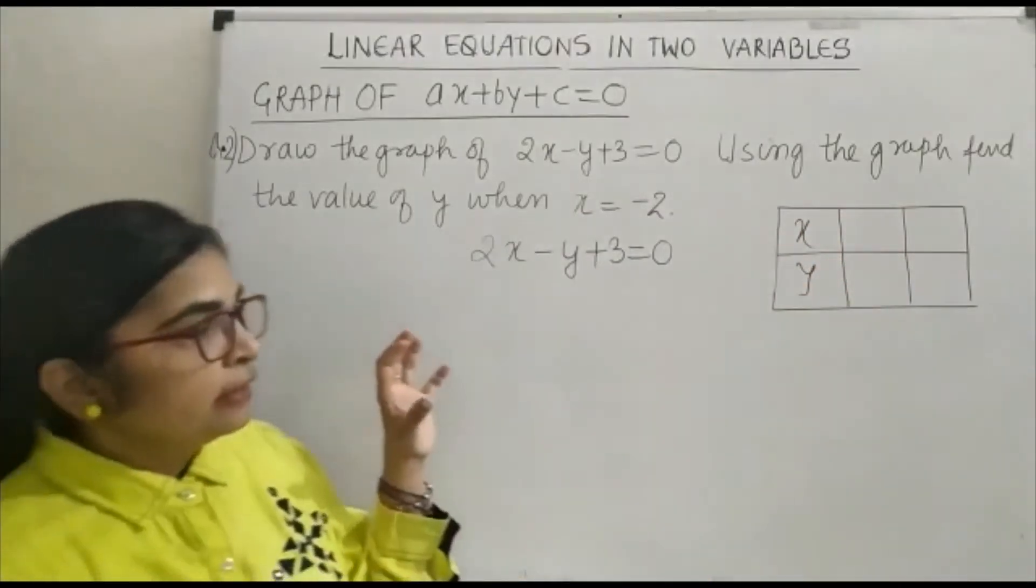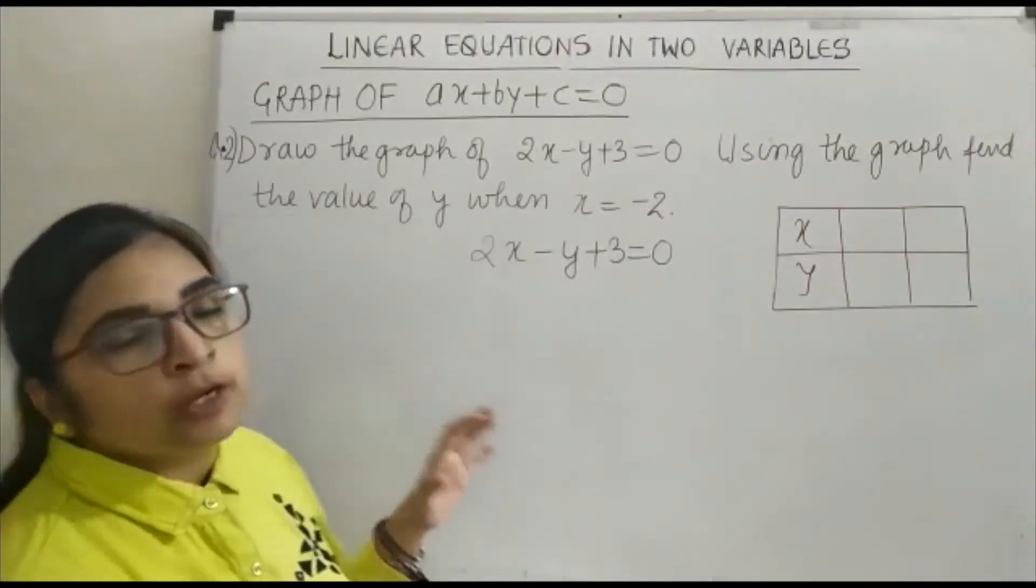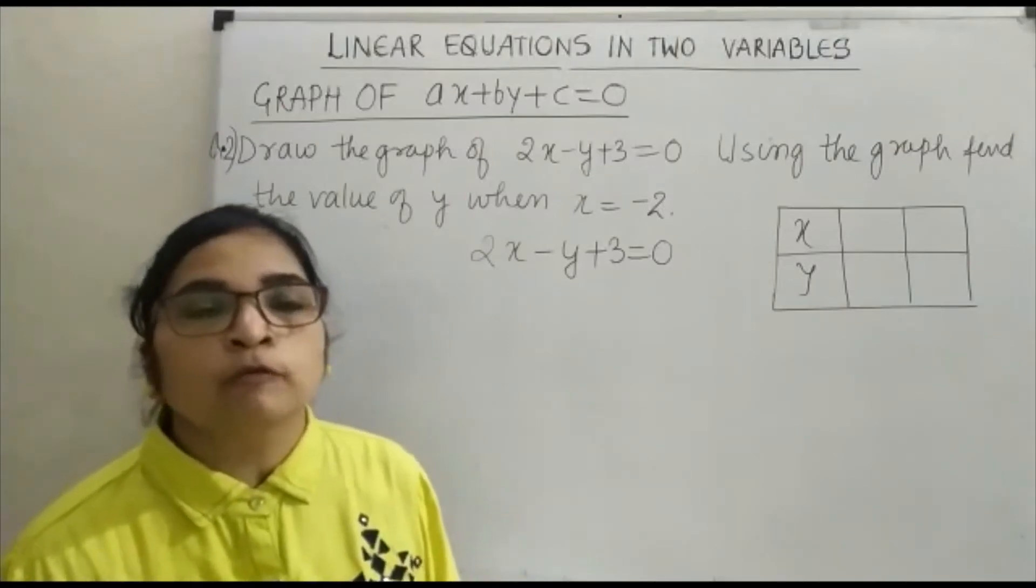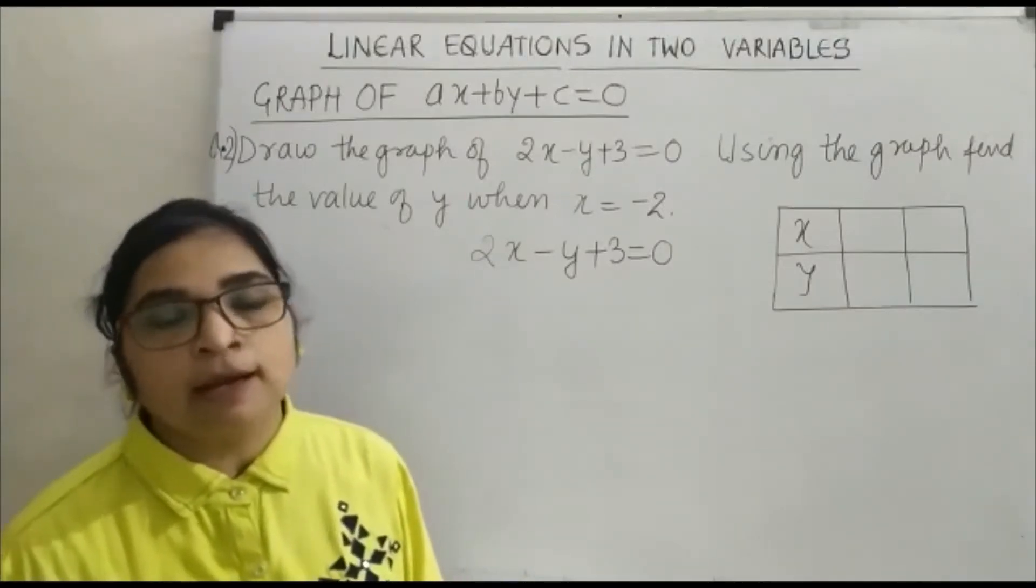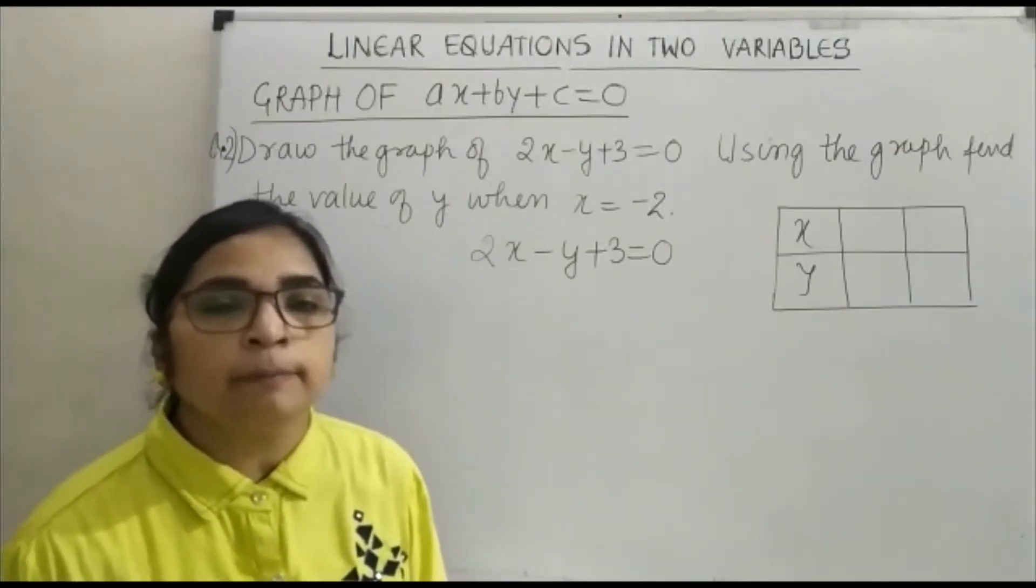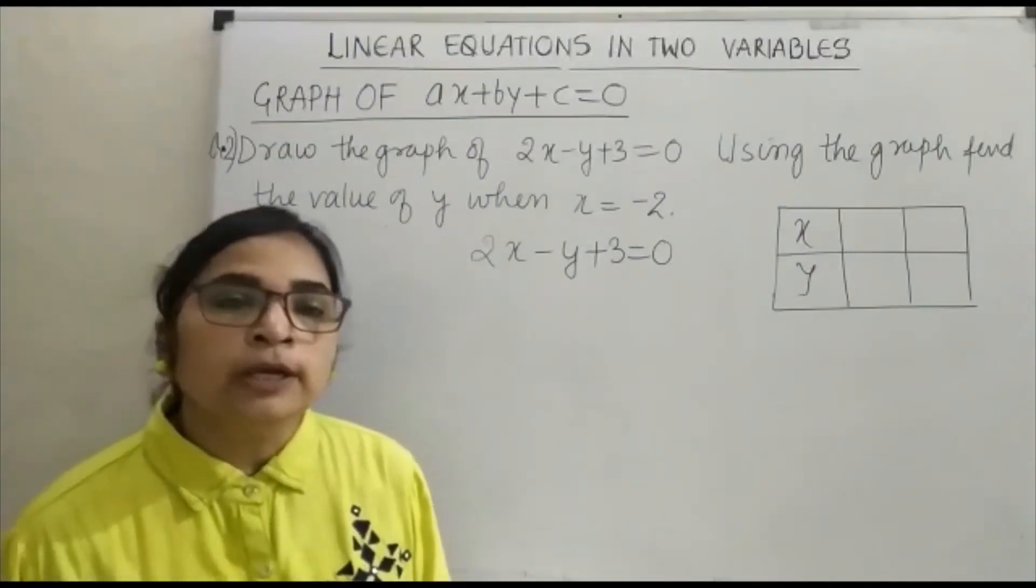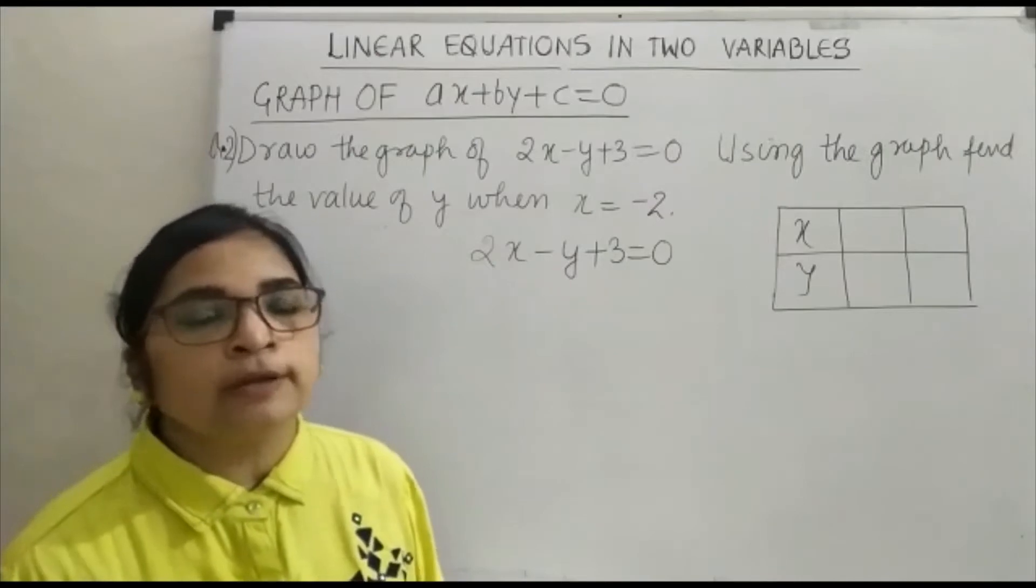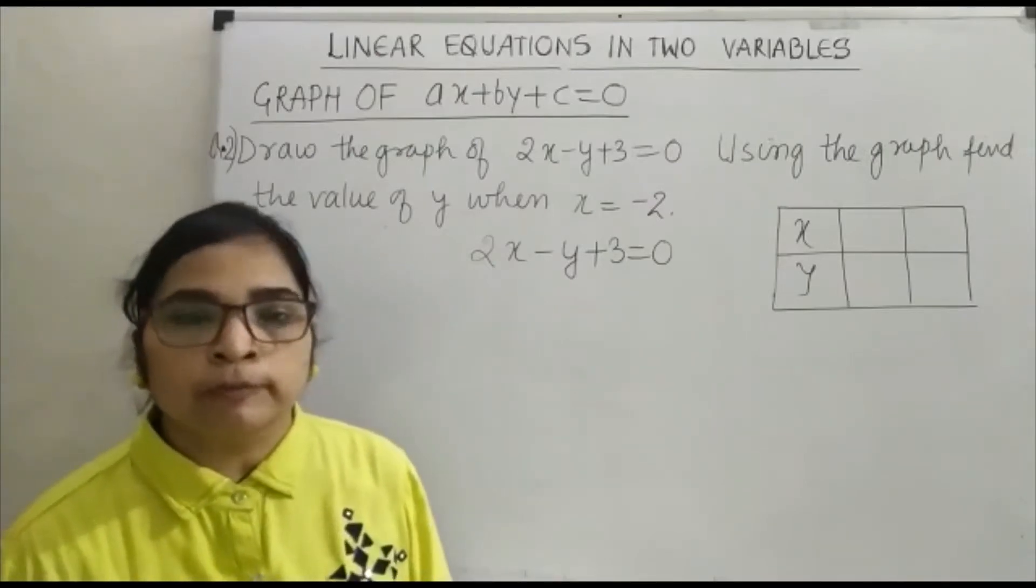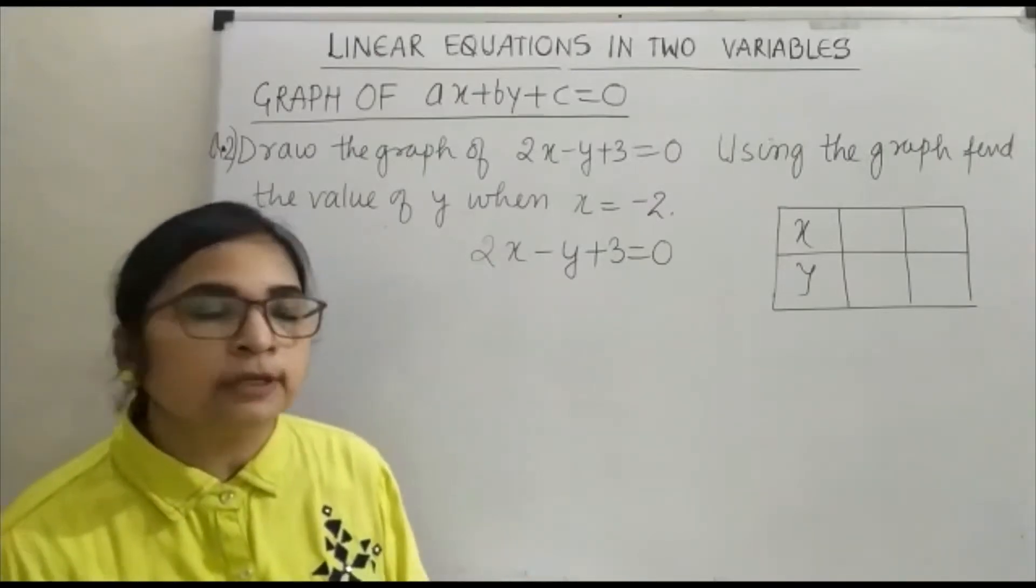You know that linear equations in two variables when plotted will be a line. A line is made up of infinitely many points. For plotting the line on the graph you need only 2 points. With 2 points it is sufficient for you to plot the graph.